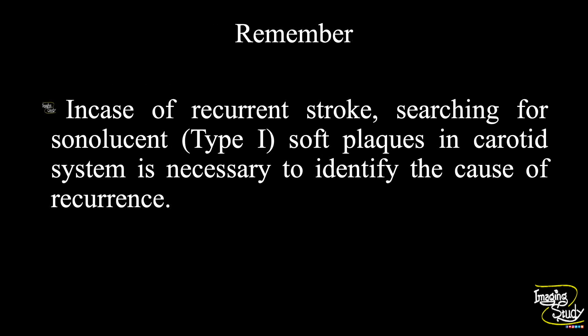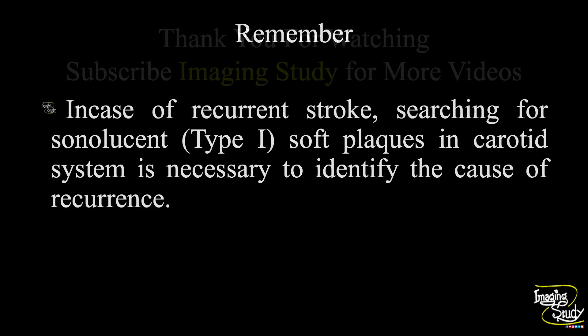The take-home message: in cases of recurrent stroke, search for sonoleucent or type 1 soft plaques in the carotid system. It is very necessary to identify the cause of recurrence, and these soft plaques are one of the most common causes. These plaques are best visualized on color Doppler.